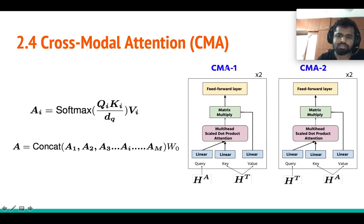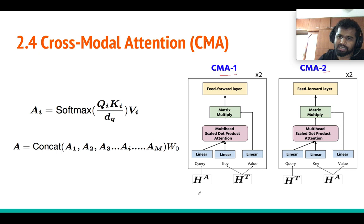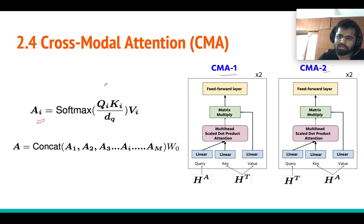Now we come to the main block: the cross-modal attention. We have two cross-modal attention blocks, one in the audio stream and one in the text stream. For CMA1 in the audio stream, we use a multi-head self-attention architecture with query, key, and value. We feed audio features from the BiLSTM as the query, and text features as both the key and value.